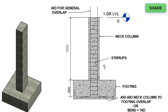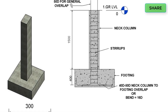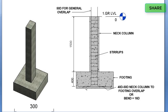Now we calculate the reinforcement from the reinforcement drawing. For the neck column, the general overlapping is 50d, and from footing lapping is 40 to 50d. The height of the neck column is 1500 mm plus 400 mm, giving 1900 mm, which is 1.9 meters.